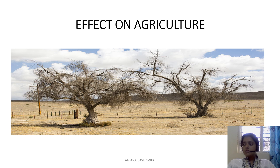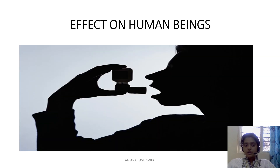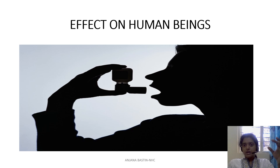Global warming also causes crop failure. A crop expected to be ready by August might not arrive until December because of shifting climate conditions. These are major challenges for farmers and people dependent on agriculture. Human beings are also affected through the same issues seen with climate change — air quality problems, infectious diseases, and respiratory problems — all due to the high temperatures that are increasing day by day because of global warming.